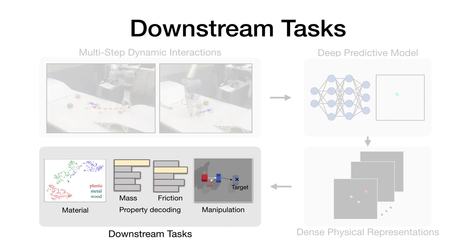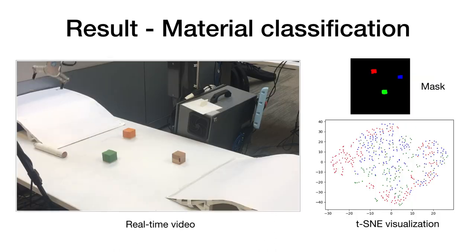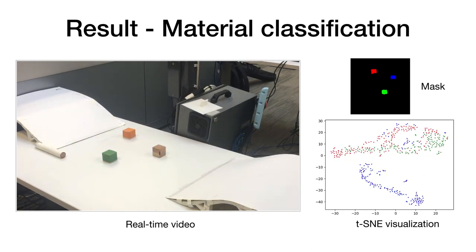We execute a series of experiments to explore whether the learned representations encode meaningful information about physical object properties and whether they are useful for downstream tasks. We first analyzed whether the learned physical representation can be used to distinguish objects' materials.